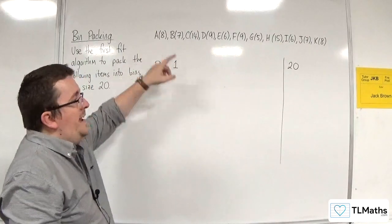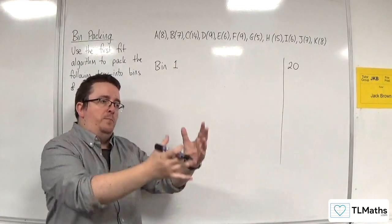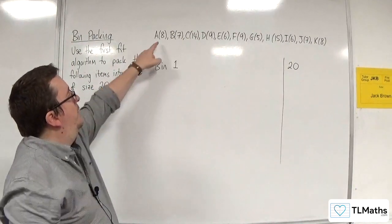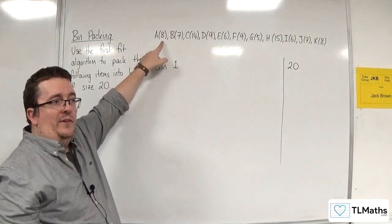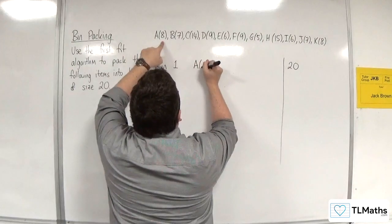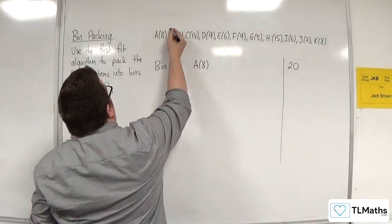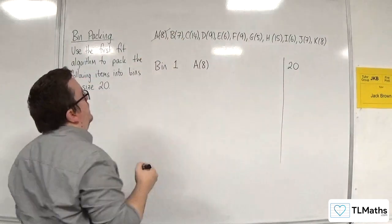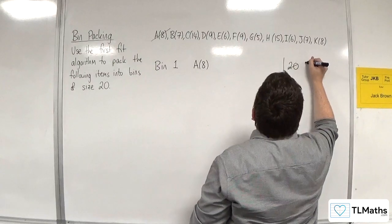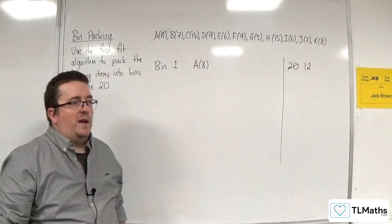So A comes along the conveyor belt. You pick it up and put it in bin one because it's of length or size eight. So we can put A8 into bin one — I'm going to cross it off — and my available space has now gone down to 12: 20 take away eight.